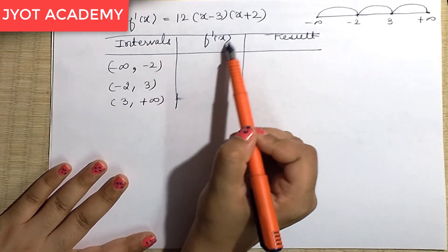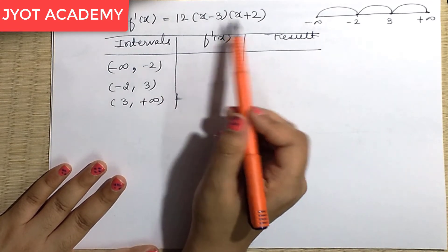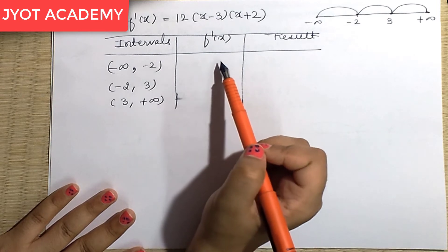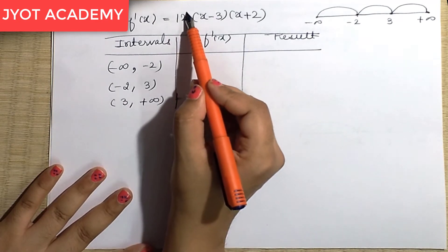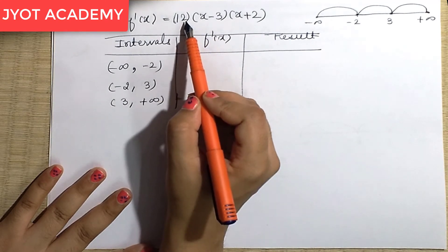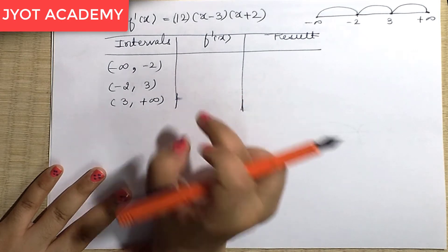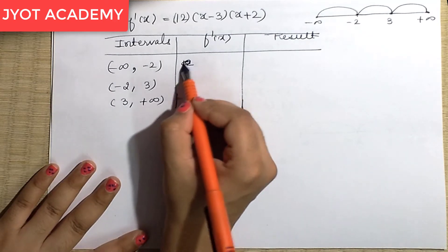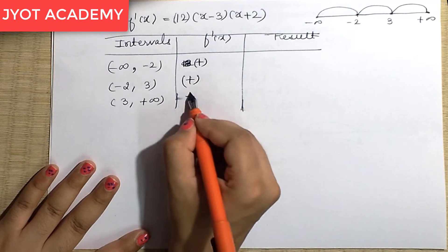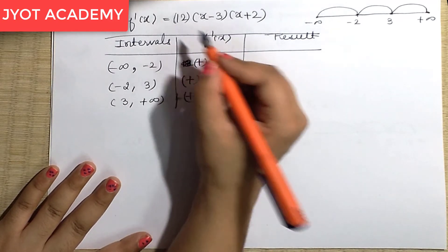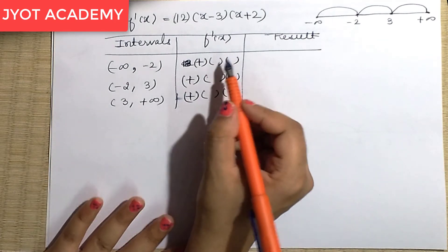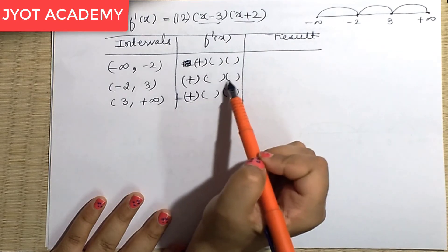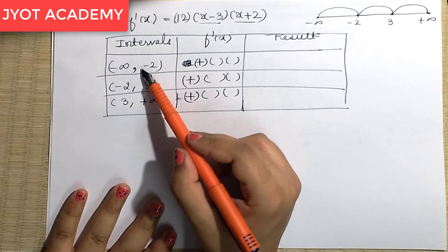For the sign chart, we note that 12 is always positive, so it does not change the sign. We place the constant 12 as positive. Now I will pick a test point from each interval and substitute it into f'(x) = 12(x - 3)(x + 2) to determine whether f'(x) is positive or negative.